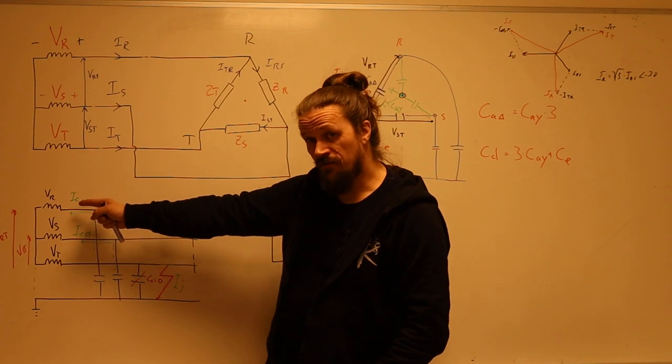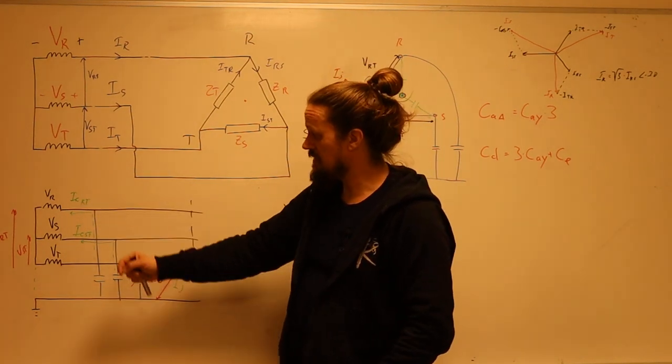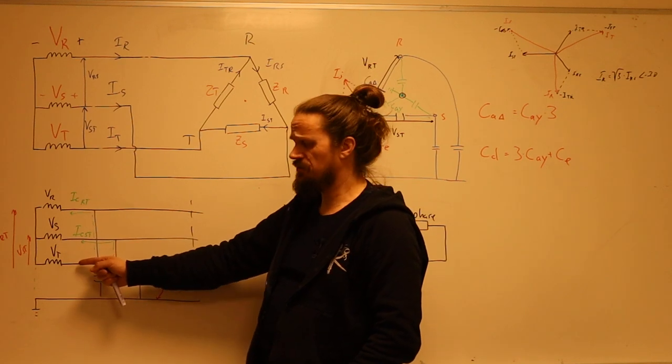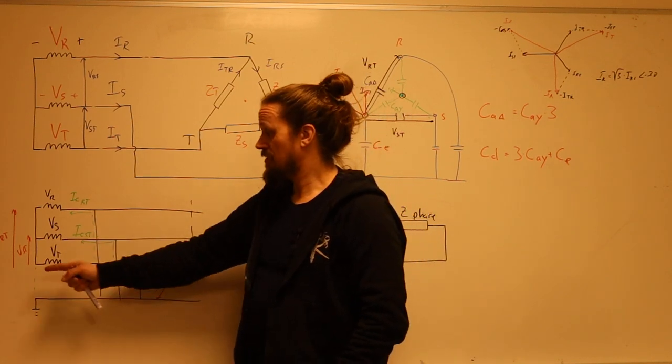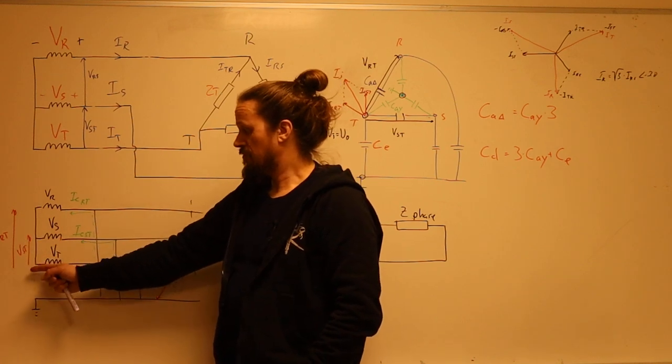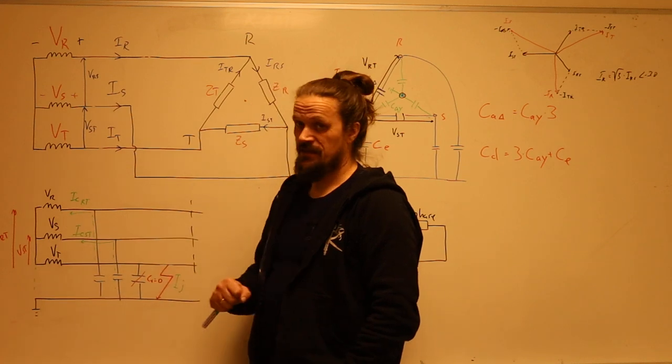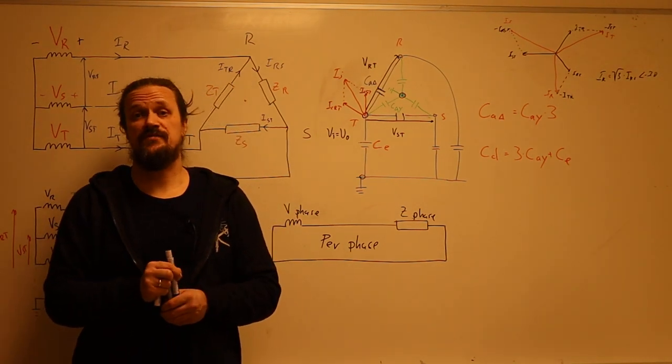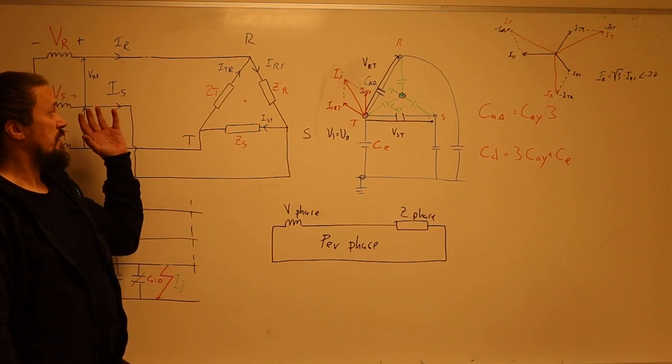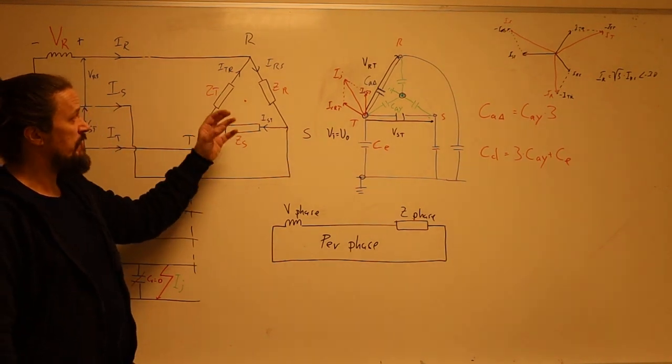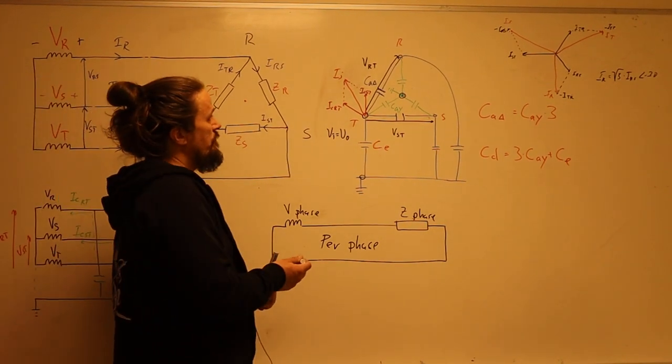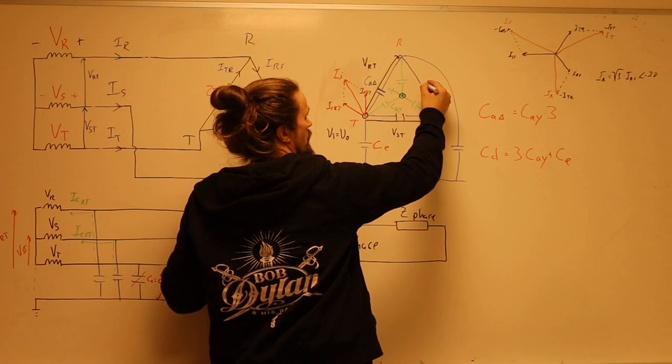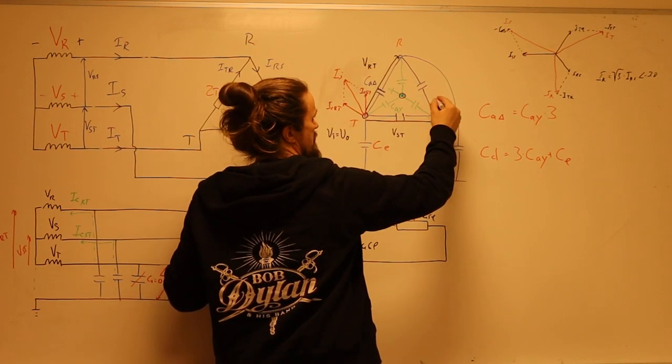That means that we will have a current in the capacitance which we can call icrt since it's going to r from t here with this potential voltage, and then there's another one which is the icst which goes over this potential here from vt to vs. The whole concept here is to make this into a per phase representation because we know that we can do this in both the star connection and the delta connection. If we look at the lines, they will have a connection between them which will have a certain capacitance.